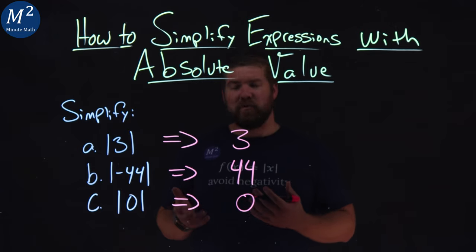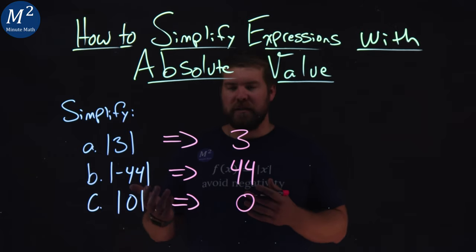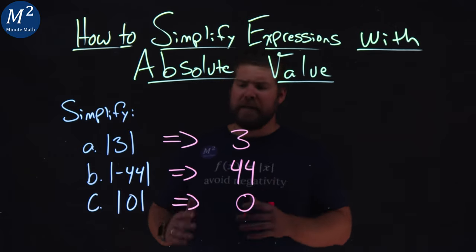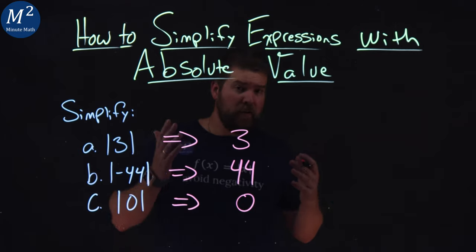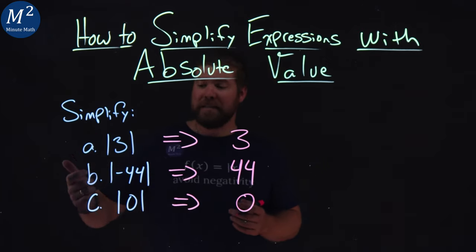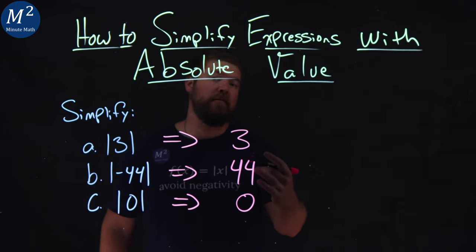And that's where it kind of gets tricky here. We can't just always say make it positive because zero is neither positive nor negative. So the distance from zero is a better definition. Either way, we've simplified three basic absolute values and got an understanding of them here.